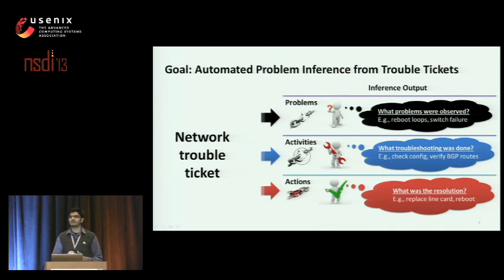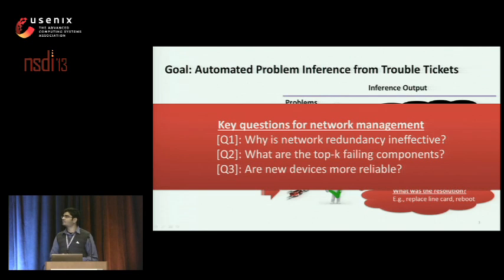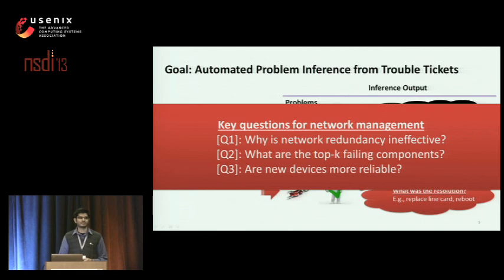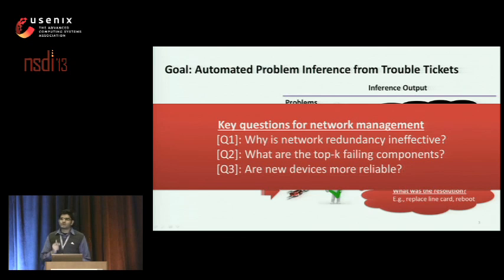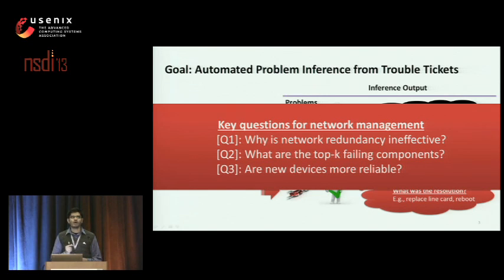Using these as building blocks, we want to answer higher-order questions. Our first question concerns redundancy — why is it ineffective? Was it due to misconfigurations, or was it humans making mistakes? Our second question is, what are the components that fail in routers and switches? Is it software or hardware? And finally, are new devices more reliable? While newer generation devices give you higher capacity and are feature-rich, do they also offer higher reliability? In the later part of my talk, I will show you how our system NetSieve answers these questions.